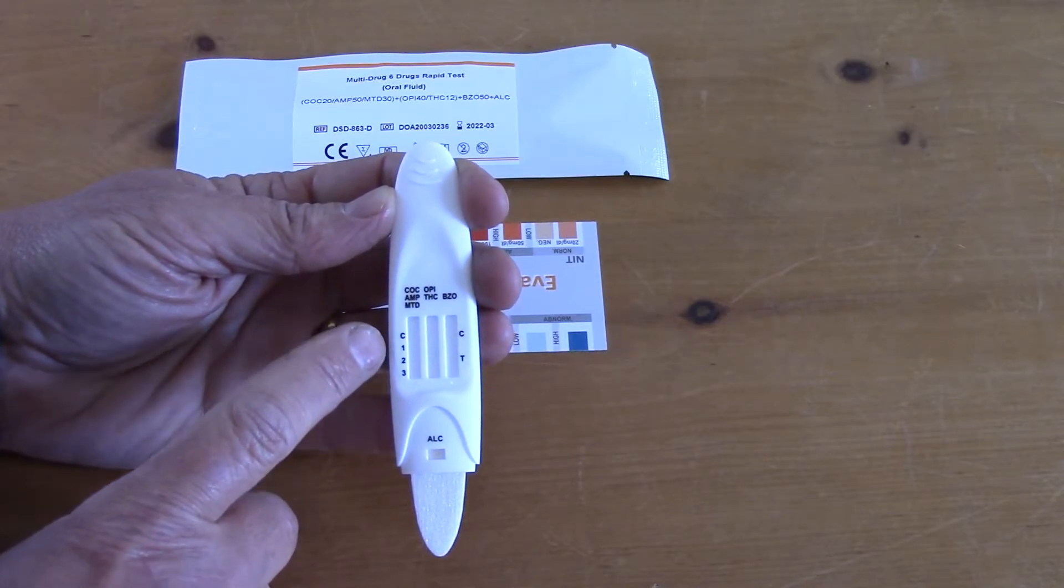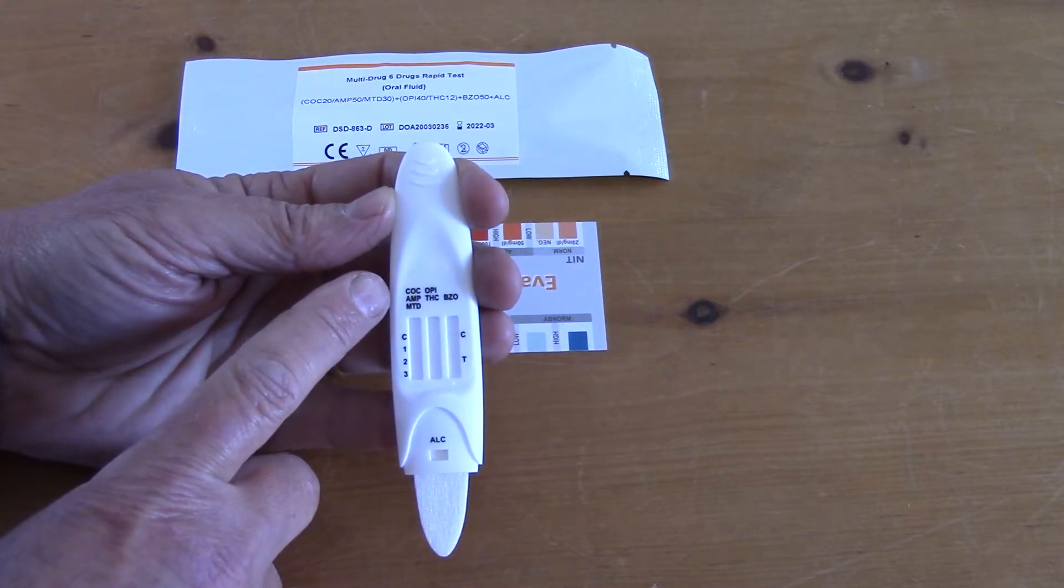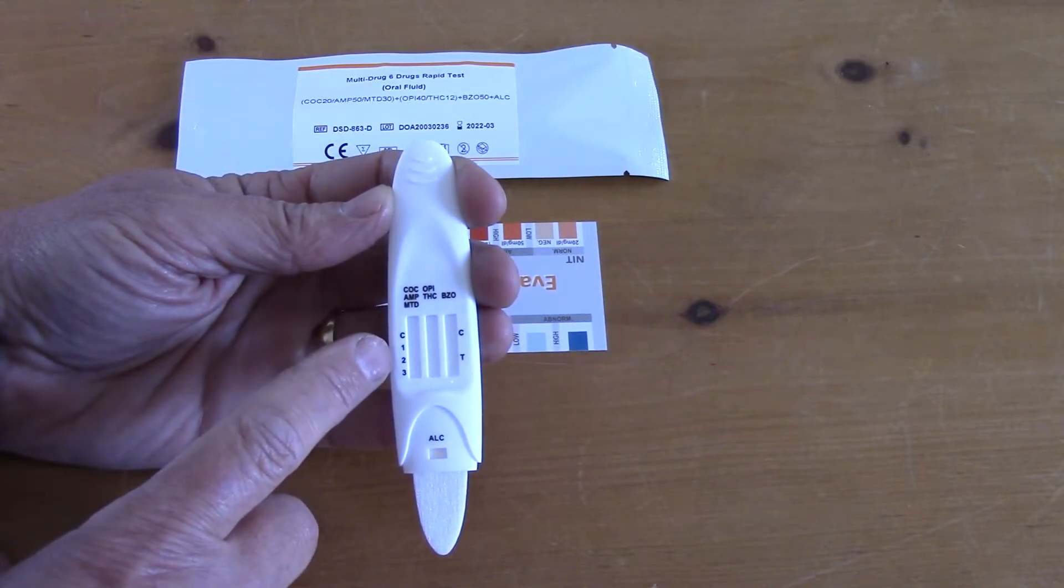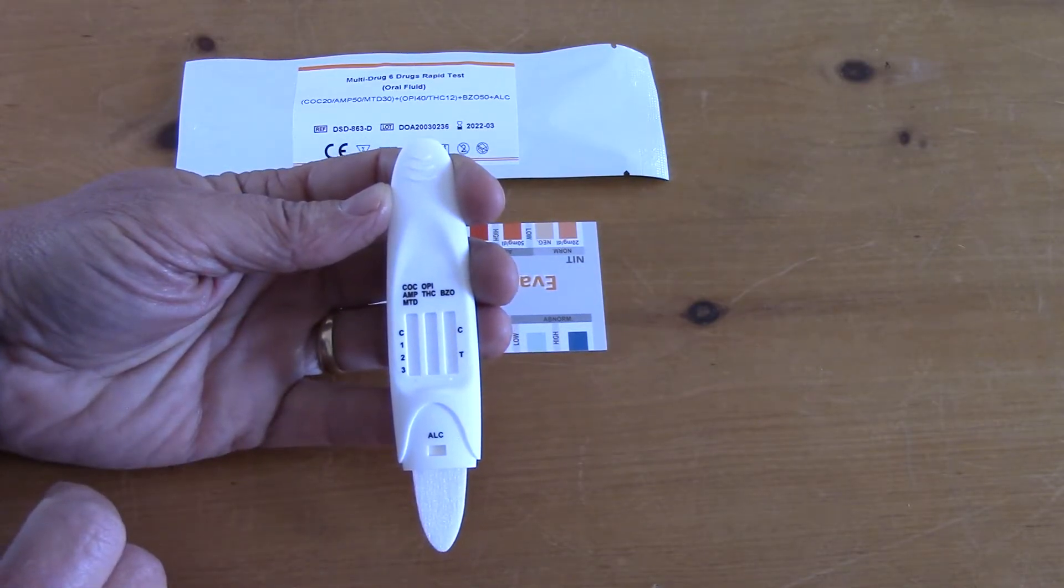You'll have three test lines in this left hand column with the abbreviations corresponding in order to what the actual drug tests are. Two in the middle column and a single test line in the right hand column.